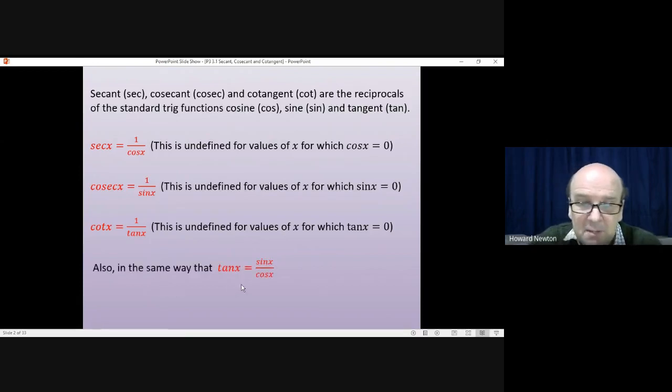And in the same way that tan can be written as sine divided by cos, because cot is 1 divided by tan, it means that cot x is equal to cos divided by sine.